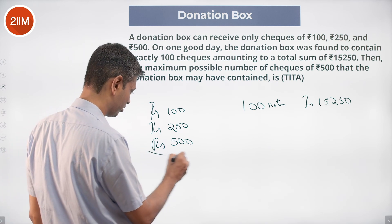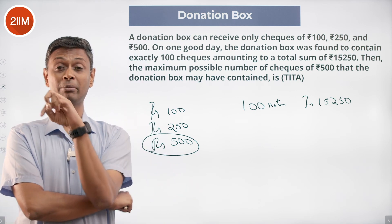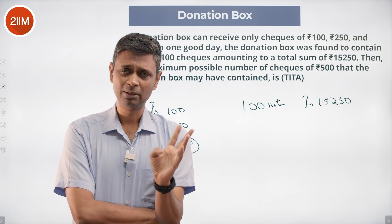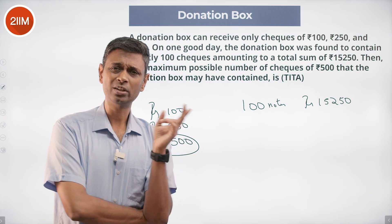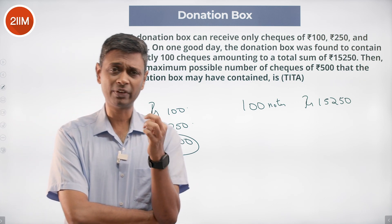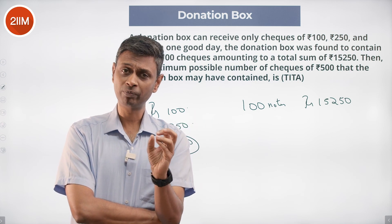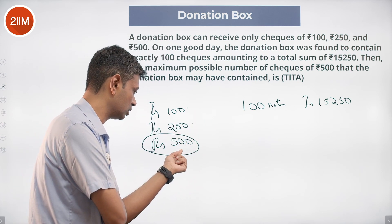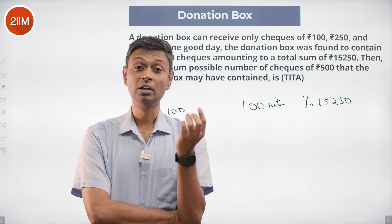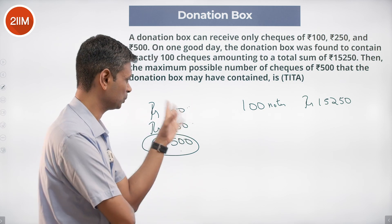We want to maximize the number of 500-rupee notes. The total amount is given. To have maximum 500-rupee notes, the remaining amount should come from the lowest denomination. Max out 500-rupee notes; whatever is remaining should come from 100-rupee notes, not 250-rupee notes. So have only 100 and 500 rupee notes — that's our strategy to maximize 500-rupee notes. Have as many 500-rupee notes as possible and let the rest come from 100-rupee notes; avoid 250-rupee notes.